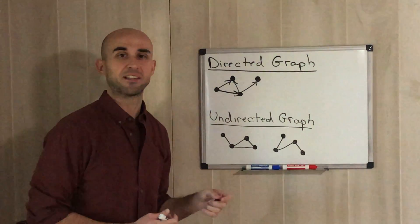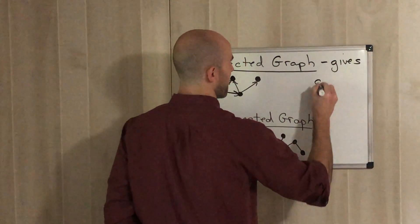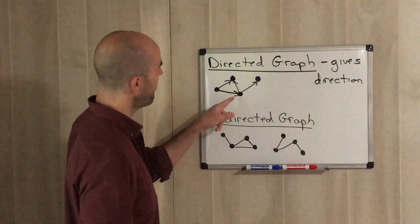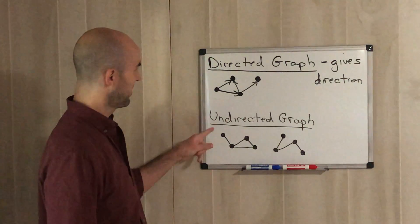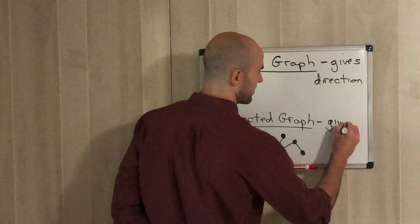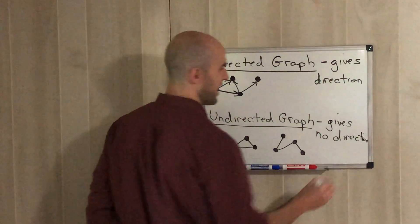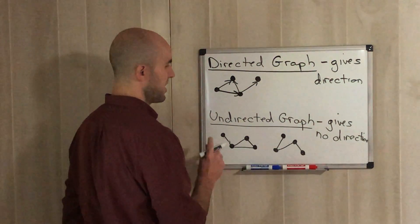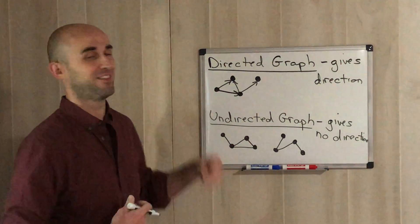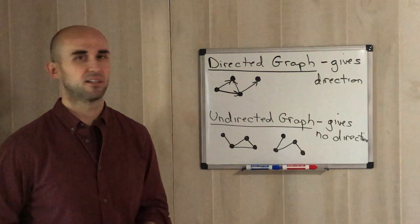A directed graph gives directions — you know the way each vertex and edge is moving because arrows show the direction. An undirected graph has no arrows, so it doesn't point where it's going. The names say it all: directed means it gives you directions; undirected means it gives you no directions whatsoever and doesn't tell you which way the edges are moving.